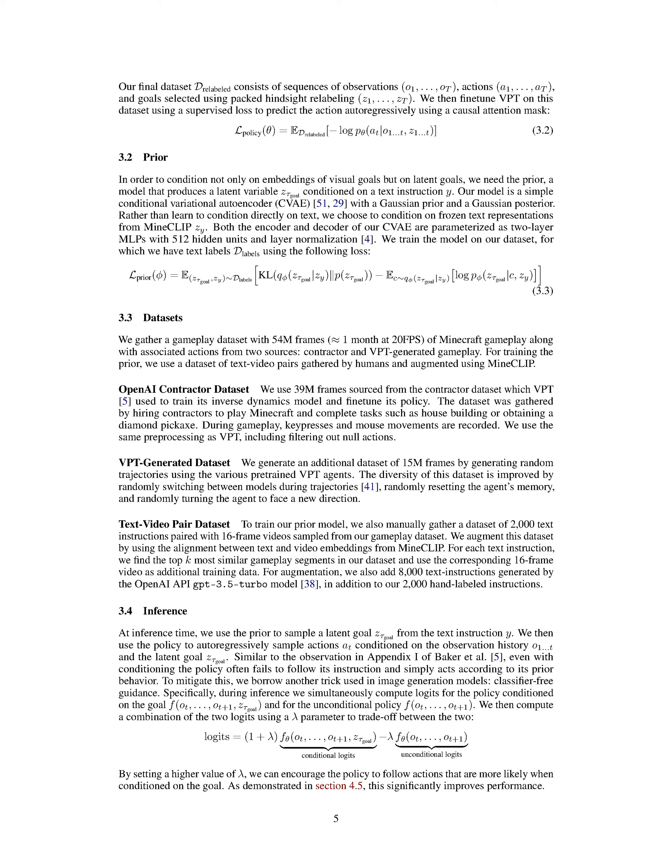The OpenAI Contractor dataset, which consists of 39 million frames, was used by VPT to train its inverse dynamics model and fine-tune its policy. It was collected by hiring contractors to play Minecraft and complete tasks like building a house or obtaining a diamond pickaxe, with all key presses and mouse movements recorded. We used the same preprocessing as VPT, which included filtering out null actions. We also created an additional dataset of 15 million frames — the VPT-generated dataset — by generating random trajectories using various pre-trained VPT agents, enhancing diversity by randomly switching between models, resetting the agent's memory, and randomly turning the agent to face a new direction.